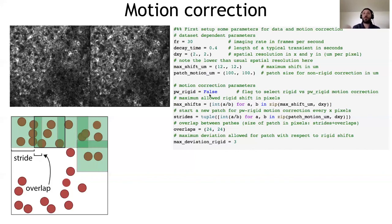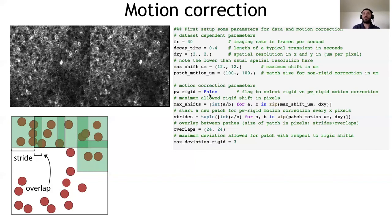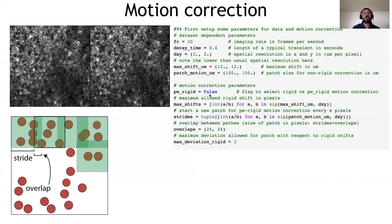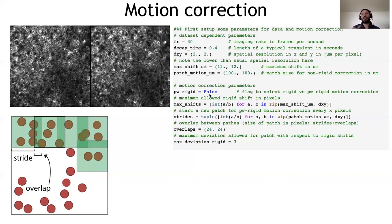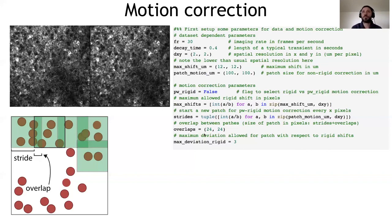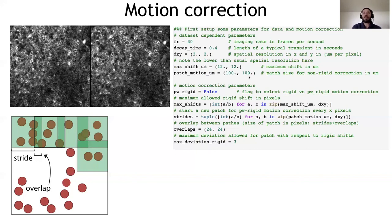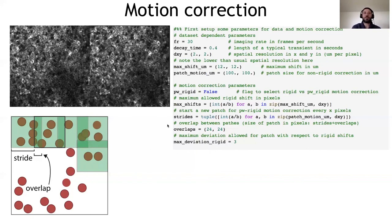So as usual, I think a nice way to go about it is to start with the rigid motion correction. If it works well, you just stick to it. Otherwise you try the piecewise rigid. In general, you don't want to change all these parameters. They are here. If you want, I can clarify what they mean. What's very important to understand is that this operation will create a memory map file.